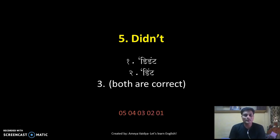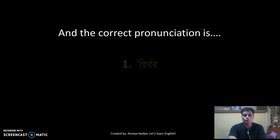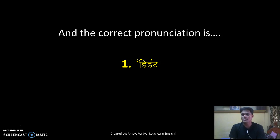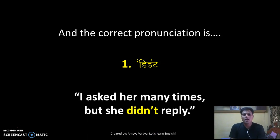Your thinking time is up and you should say option one: 'didn't.' The key point: the second 'd' is not silent. It's very common to hear people say 'didn't' — but the second 'd' is not silent. You have to say 'DIDn't.' Example: 'I asked her many times but she didn't reply.'